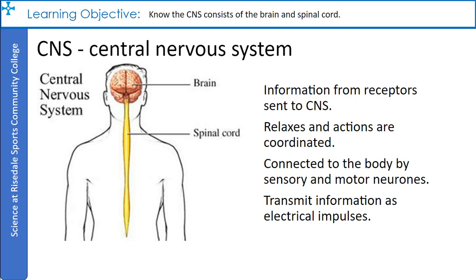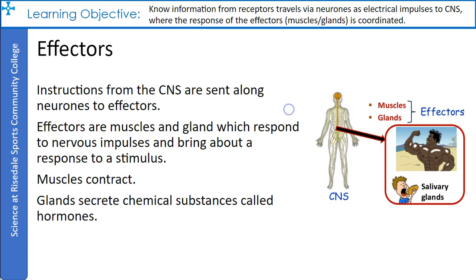In mammals, the central nervous system is connected to the body by sensory neurons and motor neurons. Neurons transmit information as electrical impulses to and from the central nervous system — this happens very quickly. Instructions from the central nervous system are sent along neurons to effectors. Effectors are muscles or glands which respond to nervous impulses and bring about a response to a stimulus. Muscles contract; glands secrete chemical substances called hormones.